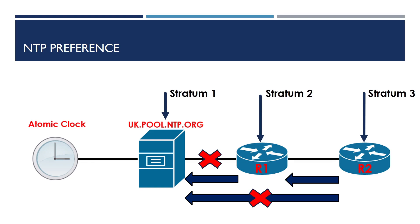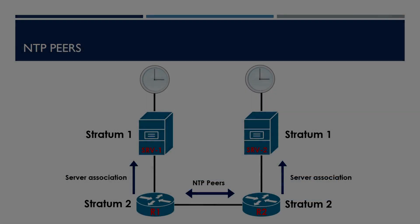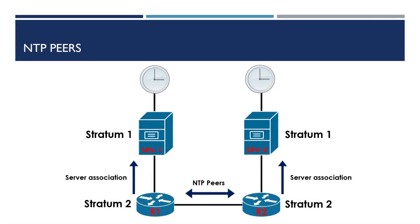Finally, NTP peers. This feature can be used to allow devices to synchronize their time between local devices, as shown in the diagram here. This can be useful where we have two of our devices synchronizing with a different authoritative time source. The devices then exchange information between them in order to provide redundancy in the event that an NTP server is unreachable.